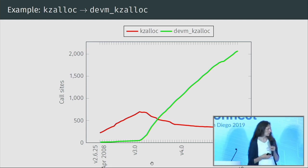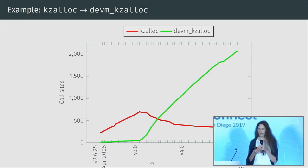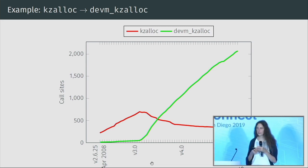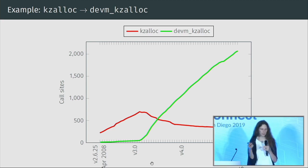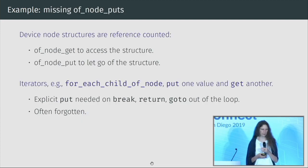It was observed that in device drivers you often allocate memory in the probe function, and those resources live until you remove the driver. The devm functions exploit this pattern to shift the freeing out of the specific driver into the general device layer. Again, a new interface that solves a problem and simplifies code was introduced, but it took a long time to take off — from 2008 to version 3.0 in 2011, nobody really picked up on these functions.